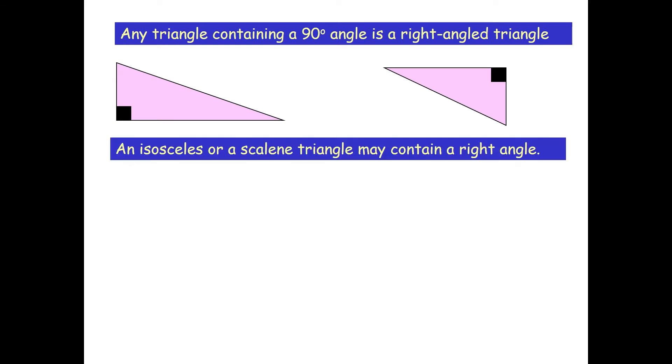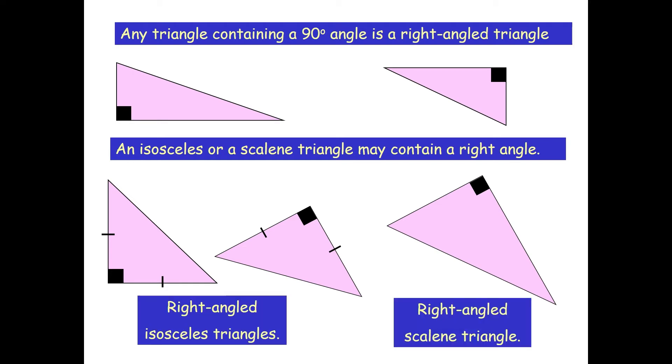In addition to this, any triangle containing a 90 degree angle is known as a right angled triangle. This can either be an isosceles or a scalene triangle.